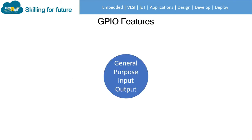GPIO stands for General Purpose Input Output. As the name suggests, this pin can be used for input as well as output. Let's discuss the features of GPIO one by one.